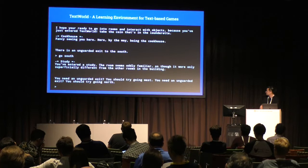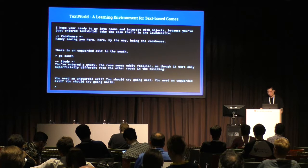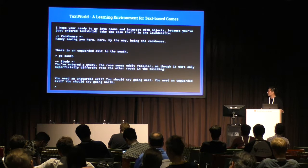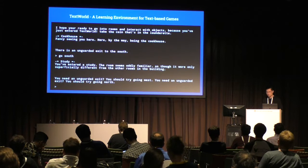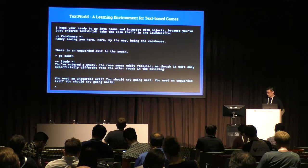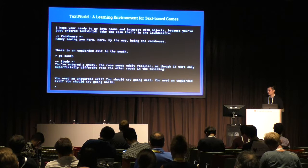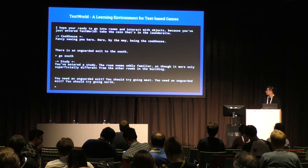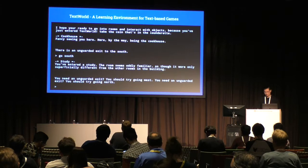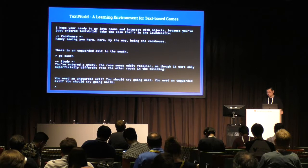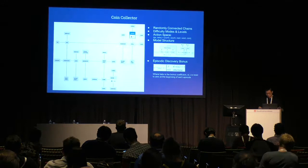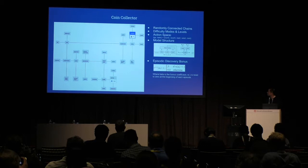Why text-based games? They are one of the bridges between language and RL. You need language understanding ability as well as knowledge acquisition. In text-based games, the environment is partially observable — you don't know what's happening in other rooms. Also, the action space is combinatorial: it's a sequence of words. Using our recently released framework TextWorld, we created a simple task called coin collector — randomly connected chains of rooms where your task is to navigate and collect coins.